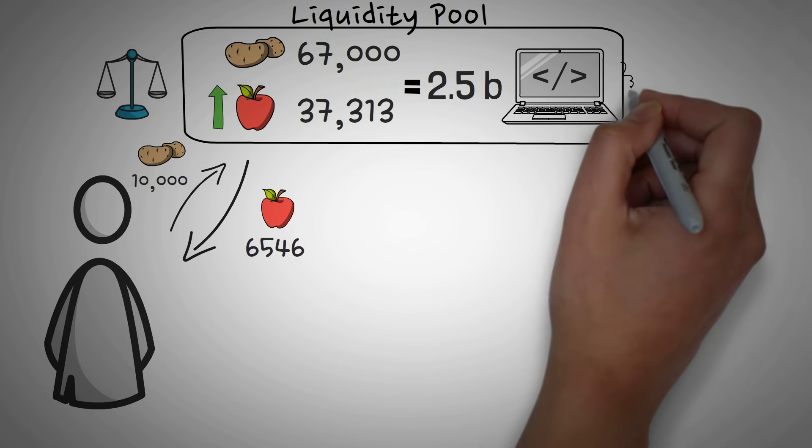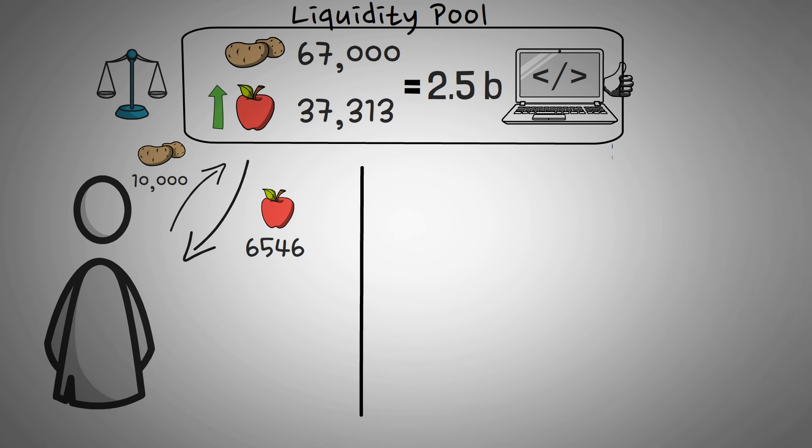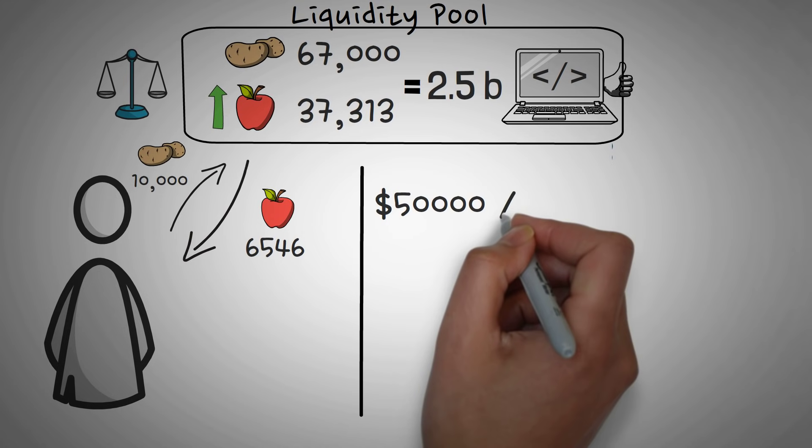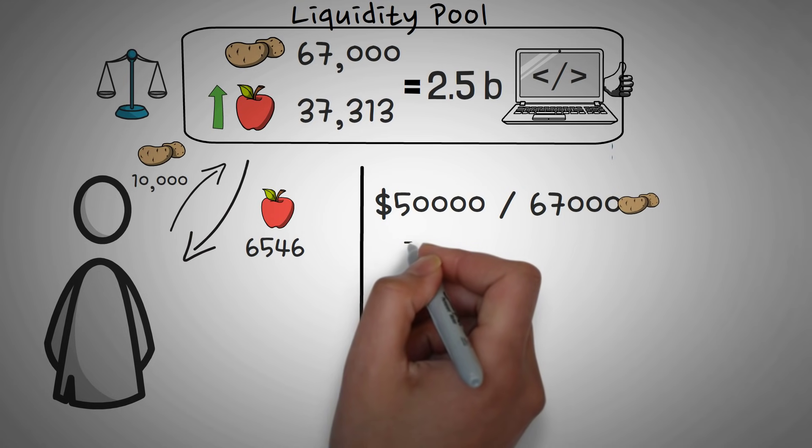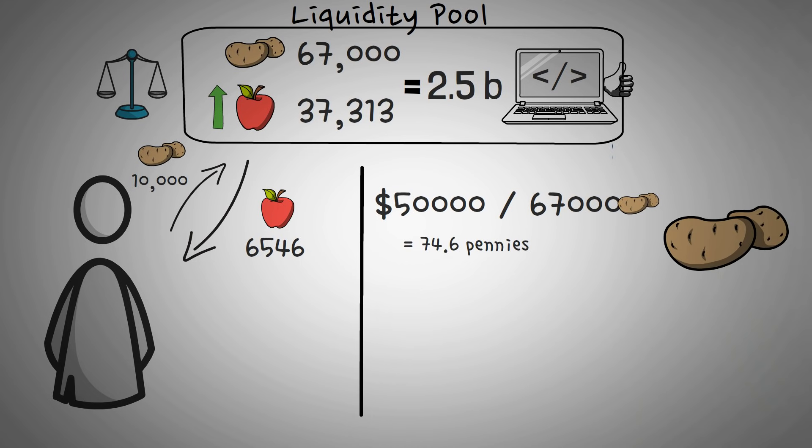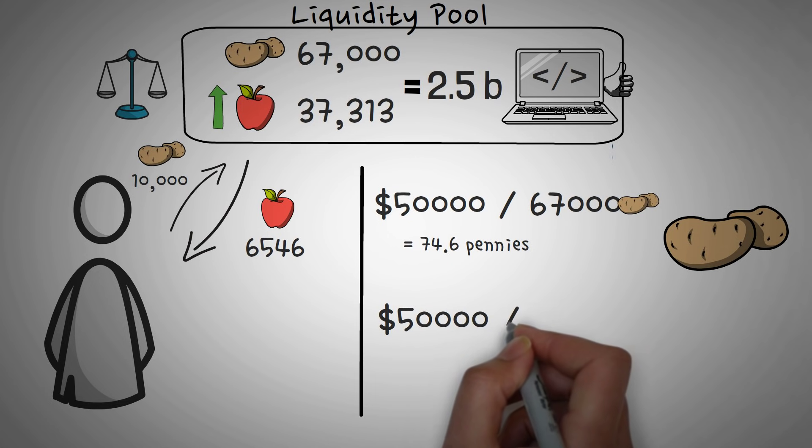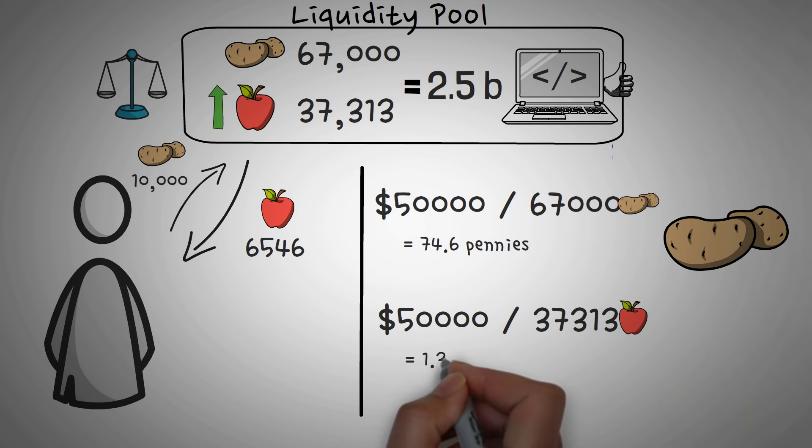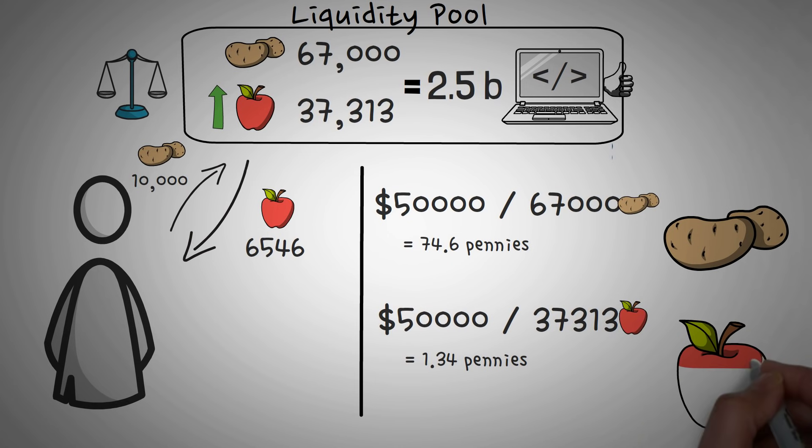So the genie, which is actually the algorithm, is happy. Now let's calculate the price. $50,000 divided by 67,000 potatoes means the potatoes are worth 74.6 pennies. They dropped even lower. Next, $50,000 divided by 37,313 apples means the apples are now worth $1.34. They rose in price.